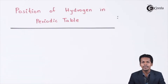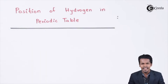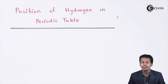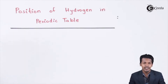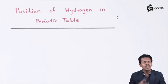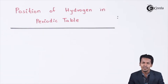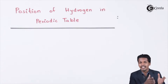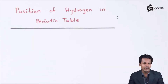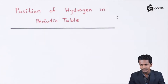We know that the periodic table is basically classified into different kinds of blocks: s-block, p-block, d-block, and f-block. Based on the electronic configuration — specifically which orbital the last electron enters — we can predict which block an element belongs to.